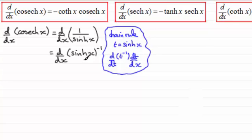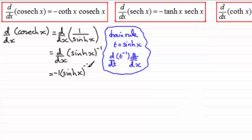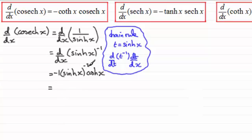So differentiating t to the minus 1 with respect to t gives minus 1 times t to the minus 2. Since t is sinh(x), that's sinh(x) all to the power minus 2. And then I need to multiply this by dt/dx, the differential of sinh(x), which is cosh(x).